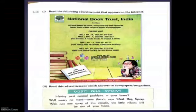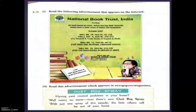Now next is B10: read the following advertisement that appears on the internet. You all know about the internet — you get pamphlets and advertisements for things you want to buy. Let's read: 'National Book Trust India invites all book lovers to come, select and buy their favorite books from a wide range of topics and languages. Please visit Hall Number 1, Stall Number 85-200; Hall Number 4, Stall Number 270 to 273.'